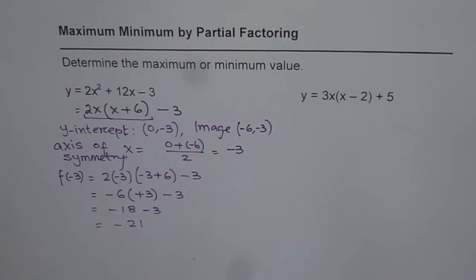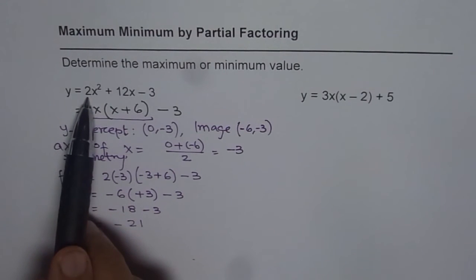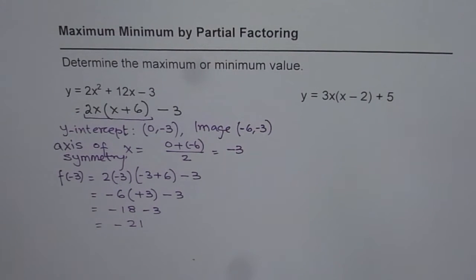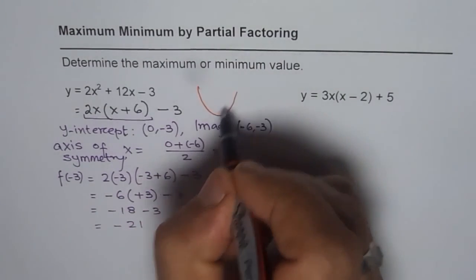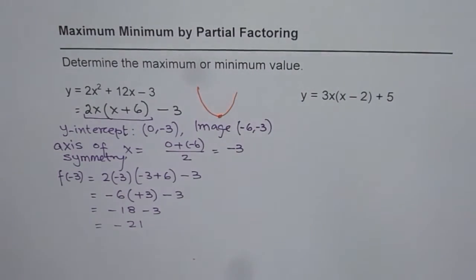So, for this function, we have a minimum value. Why a minimum? Leading coefficient is positive and therefore, the parabola will open upwards. It opens upwards and the vertex represents minimum for us.